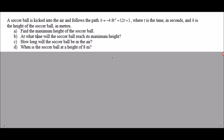Here's what the question says. A soccer ball is kicked into the air and follows the path h equals negative 4.9 t squared plus 12t plus 1, where t is time in seconds and h is the height of the soccer ball in meters. There are four parts: find the maximum height, at what time will the ball reach that maximum height, how long is it in the air, and when is it at a height of eight meters.